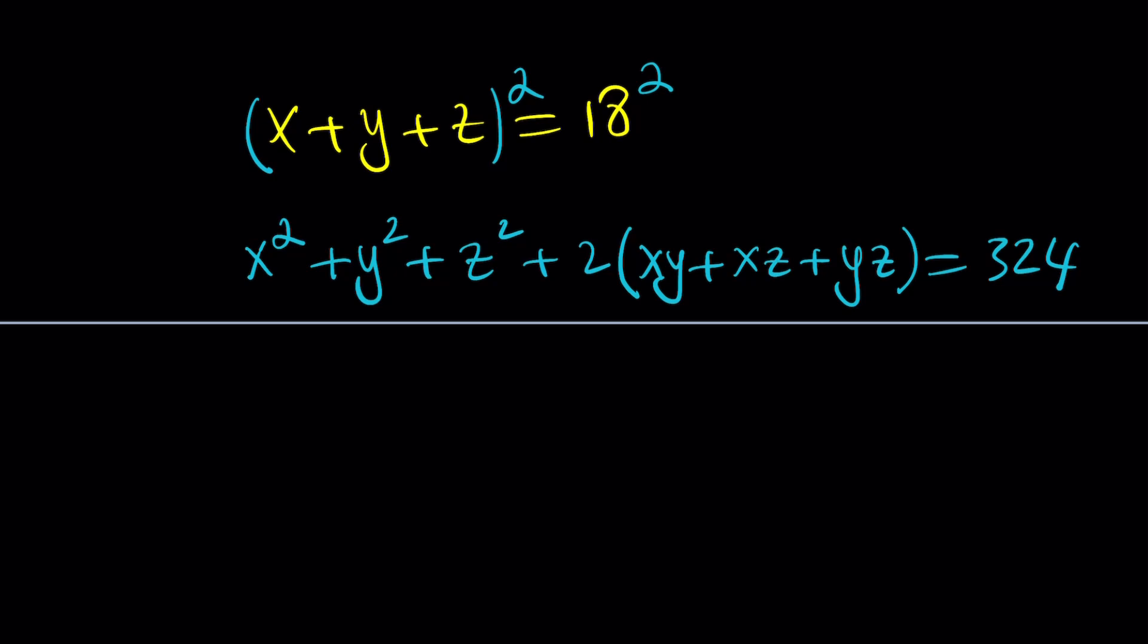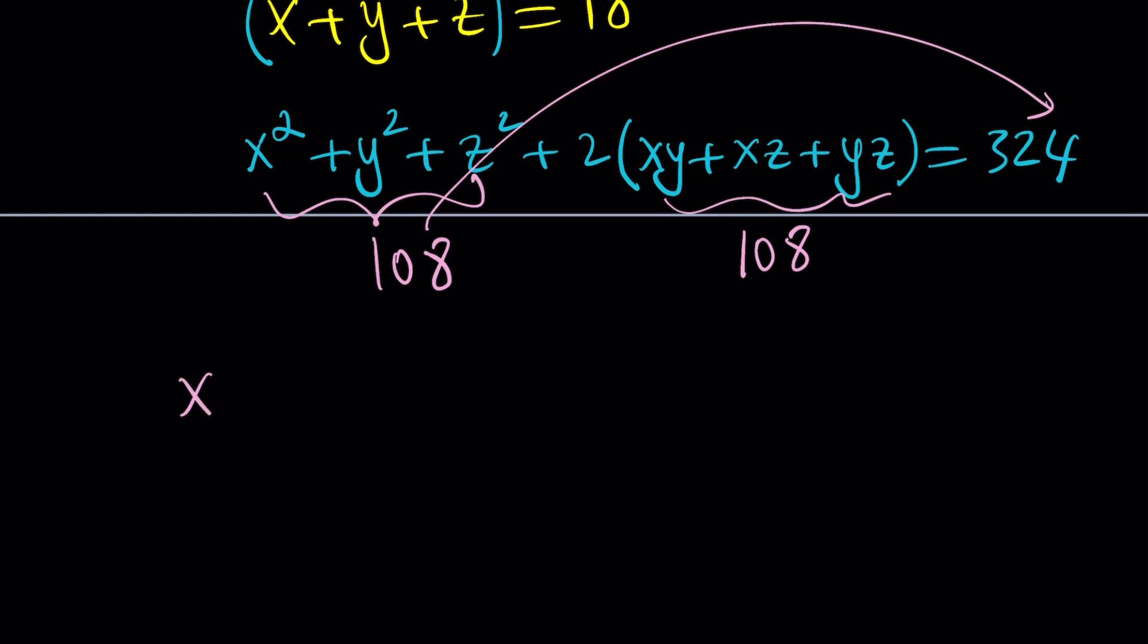Now x squared plus y squared plus z squared was given as 108. If you subtract this number from 324, you get 216. Half of that is going to be 108. Uh-oh. That looks familiar, doesn't it?